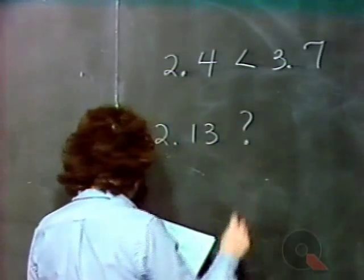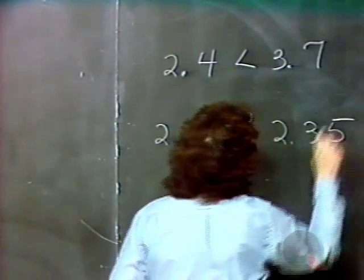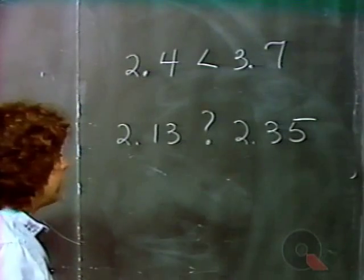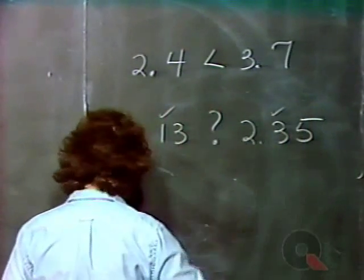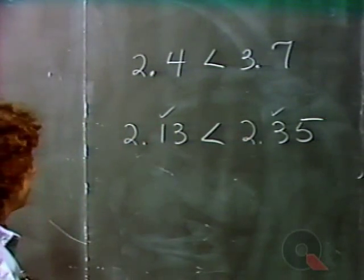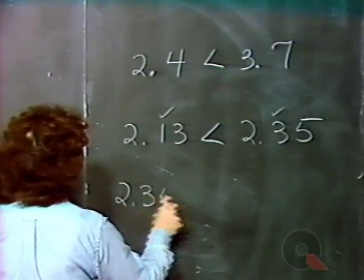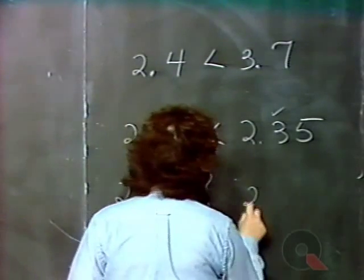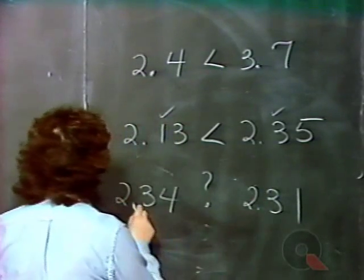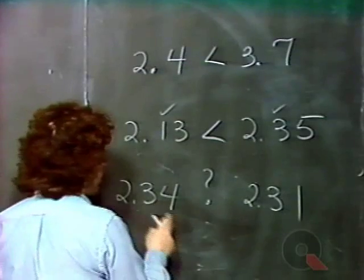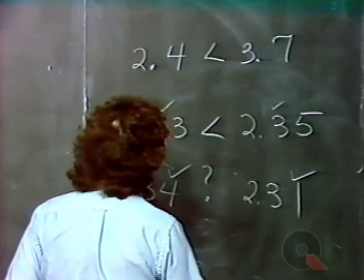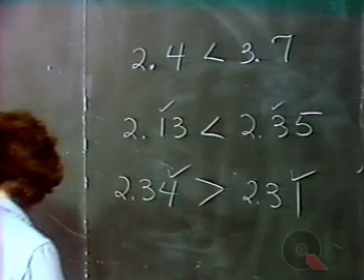Comparing 2.13 to 2.35: the numbers to the left of the decimal point are both 2, so we move to the right and compare the first digit. Since 1 is less than 3, 2.13 is less than 2.35. Comparing 2.34 to 2.31: the twos match, and the first decimal digit 3 matches, so we compare the second decimal digit. Since 4 is bigger than 1, 2.34 is bigger than 2.31.